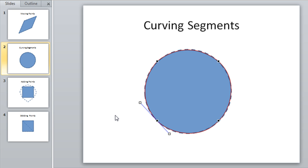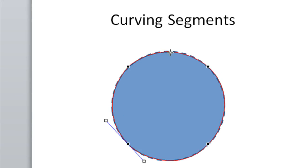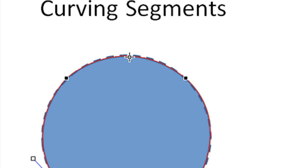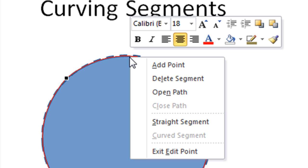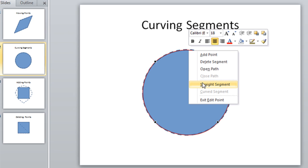Now, another way you can adjust how a segment curves is by right-clicking on any segment. And by the way, to right-click, you do need this cursor showing. It looks like a cross with a square in the center of it. When you see that cursor, you can right-click. And you'll see a little shortcut menu of all the things that you can do, such as add a point or delete a segment. But there's another option called Straight Segment.